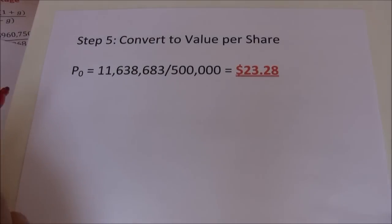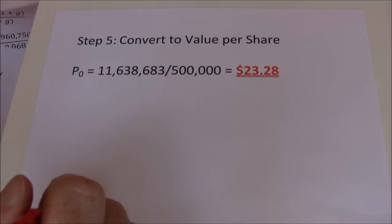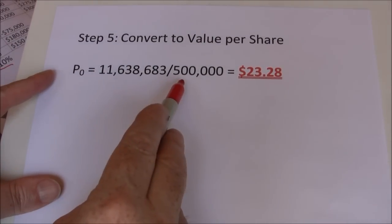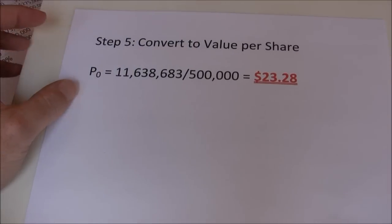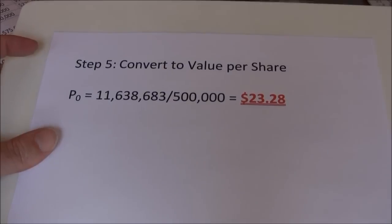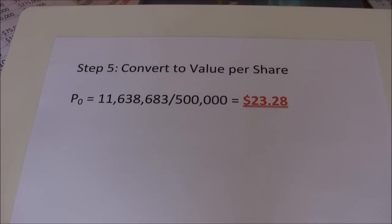The last step is to convert the equity value to a per-share value. In our example, we said the number of shares outstanding is 500,000. So we take the value of the firm's equity — $11,638,683 — divided by the 500,000 shares outstanding, and that gives us a per-share value of $23.28. We're essentially valuing the entire company — as a large institutional investor might if buying the whole firm — and then dividing by shares to get the per-share figure.